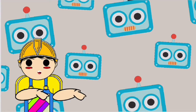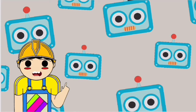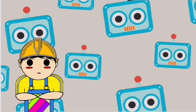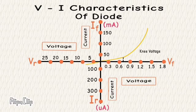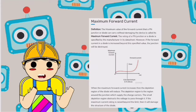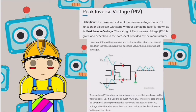Doosri taraf, jab diode mein reverse voltage apply kiya jata hai, tab depletion layer bahut bhar jati hai aur isliye diode ke andar current flow nahi karta. Lekin kya tum log jaante ho ki iska bhi ek limit hai? Agar usse zyada voltage apply kiya jaye, toh diode short ho jata hai aur current flow karta hai. Isliye diode ki limitation jaanne ke liye us point ko ek naam diya jata hai jo hai breakdown voltage. Is tarah aur bhi kuch limitations hain — video pause karke in sab ke baare mein padh sakte ho.